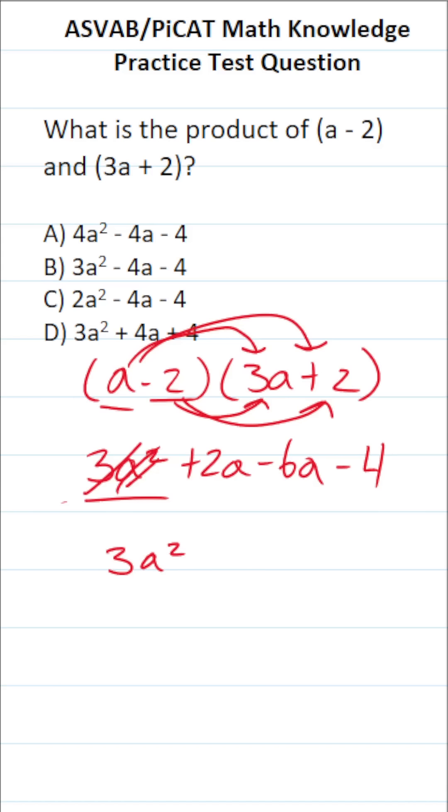2a minus 6a are like terms. 2a minus 6a is negative 4a. Cross those out, and then we're just left with negative 4.